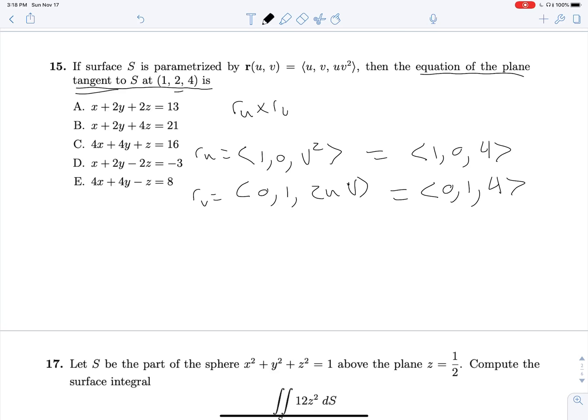So now taking our cross product, we will get negative 4 comma negative 4 comma 1, which we can express, if these are the coefficients of a plane, we can express that plane as negative 4x minus 4y plus z equals something. And in order to find that something, we can just plug in our ordered pair 1, 2, and 4. We will get negative 4 minus 8 plus 4, which is negative 8.